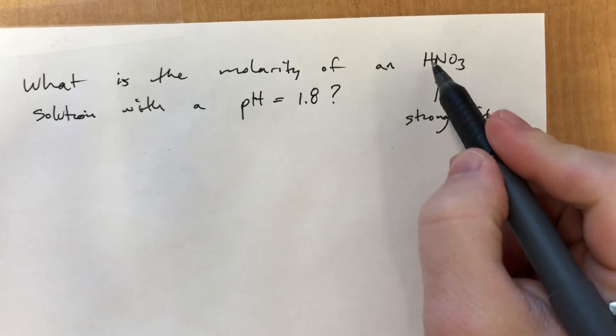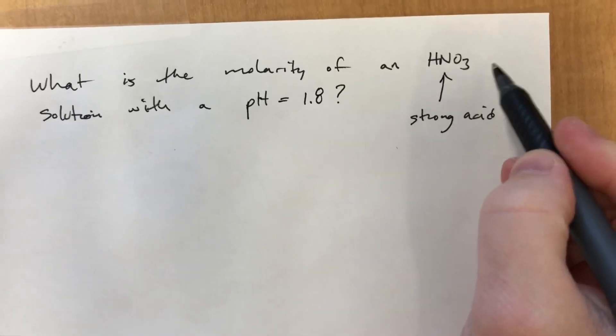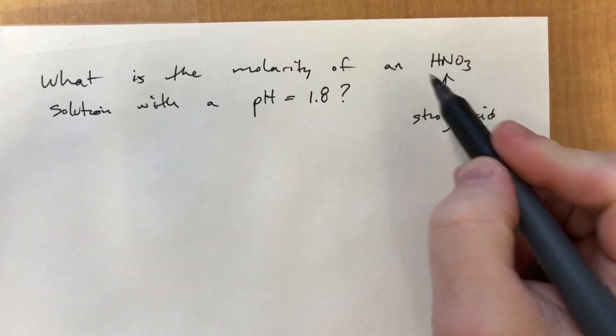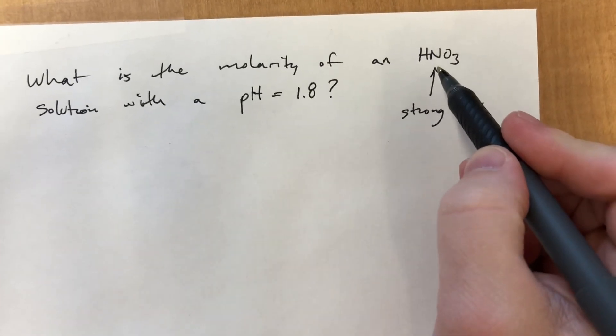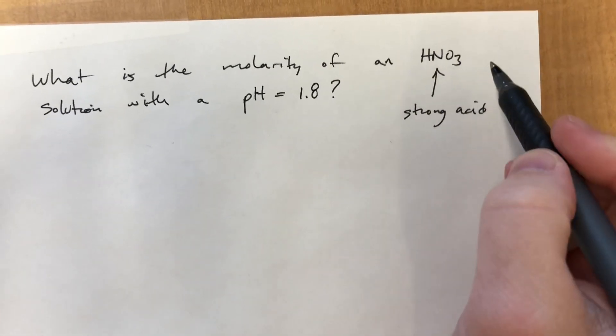So this completely dissociates. For every one mole of this, you're going to get an H+. So basically, if we can figure out how much H+ there is, or how much H3O+ there is, we can figure out the molarity of the HNO3.